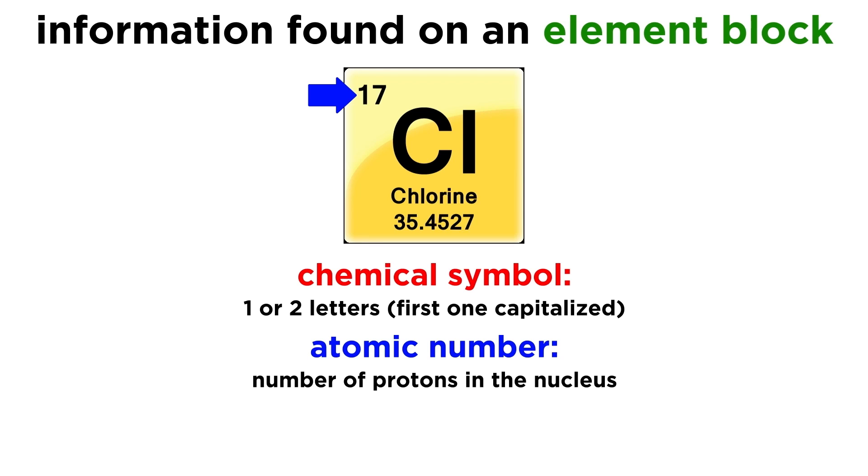Next, we will certainly notice the atomic number. This refers to the number of protons in an atom, and this is what defines the element. One proton corresponds to hydrogen, two to helium, and so forth.